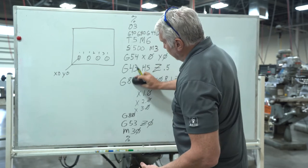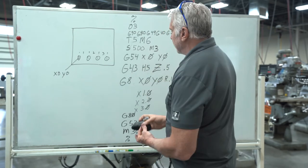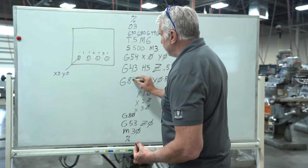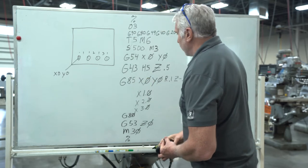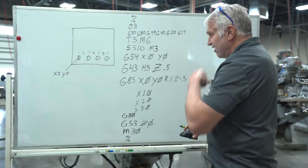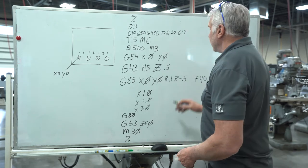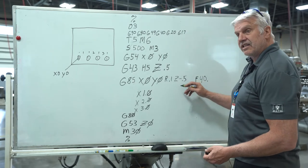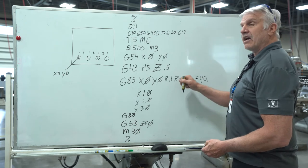Then instead of a G84, which is a tapping cycle, we're doing a G85, which is a reaming, or sometimes they call it a boring cycle, but we're using a reamer that's going to feed down to a negative half inch. When it gets there, then it retracts back up.